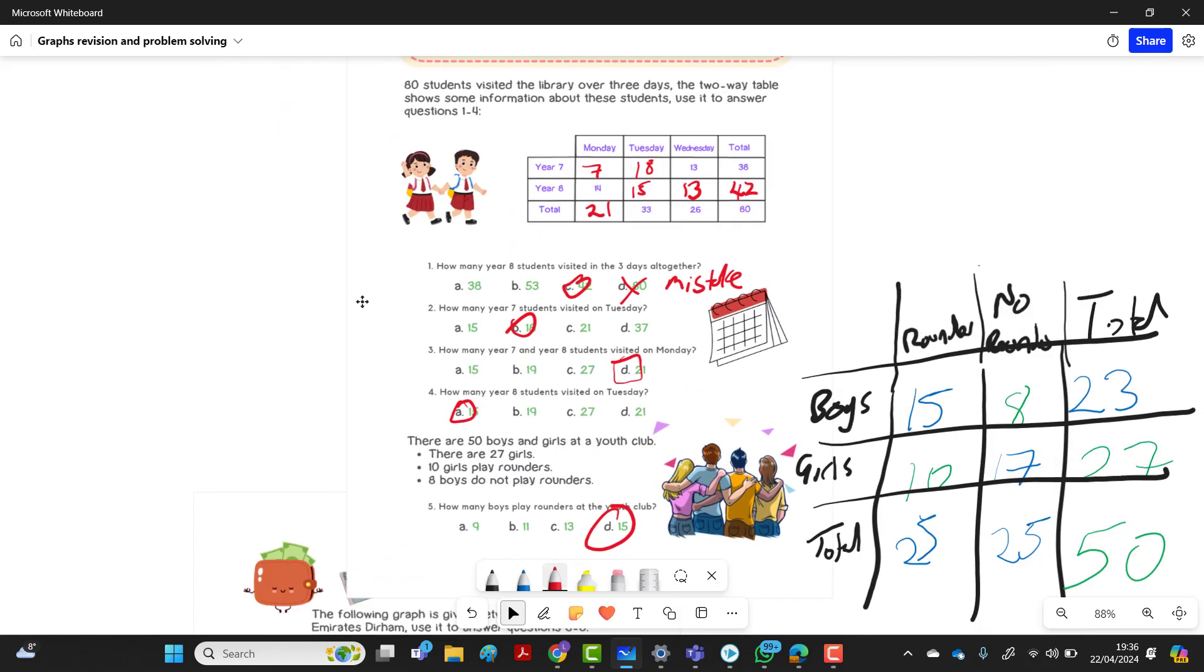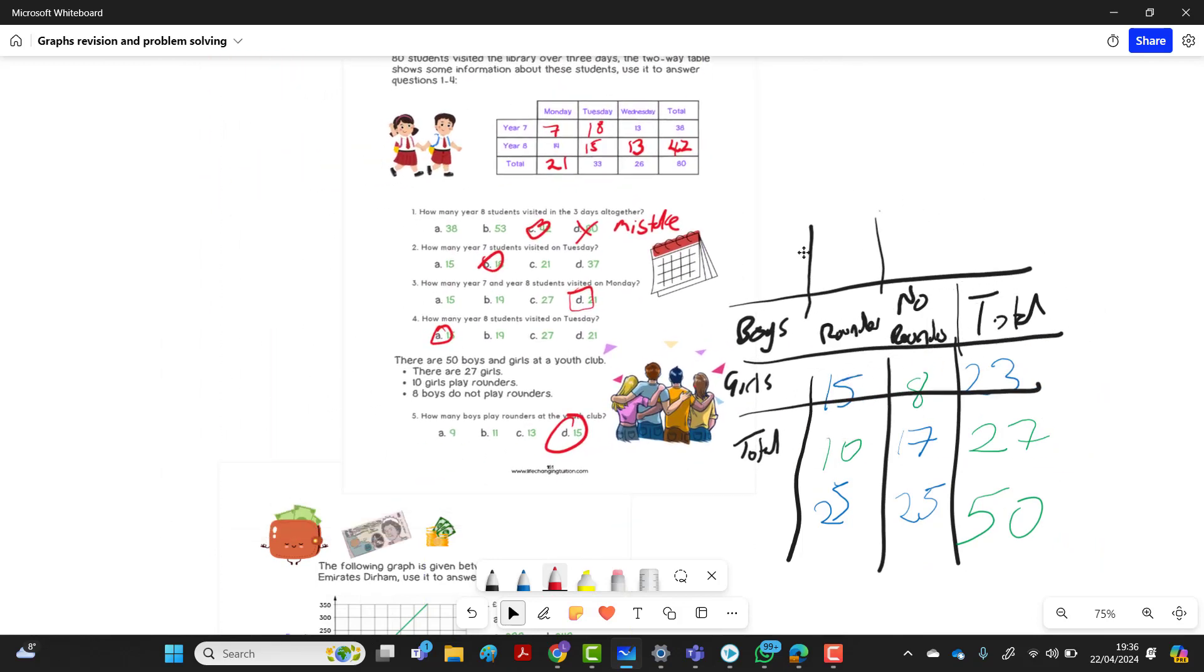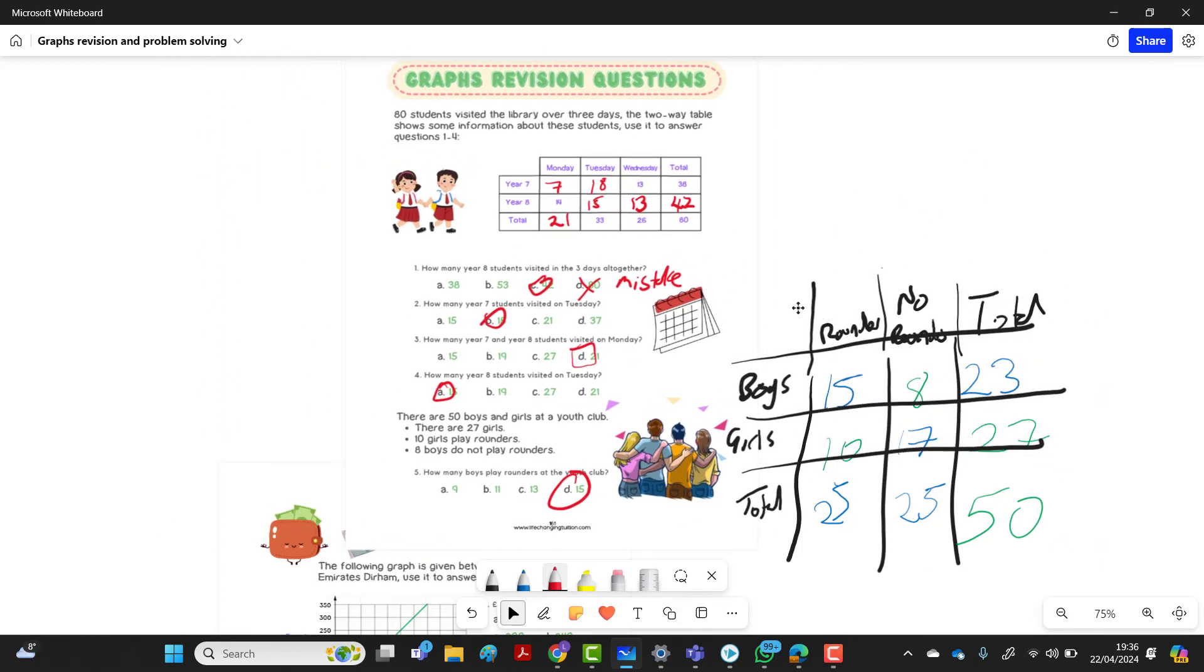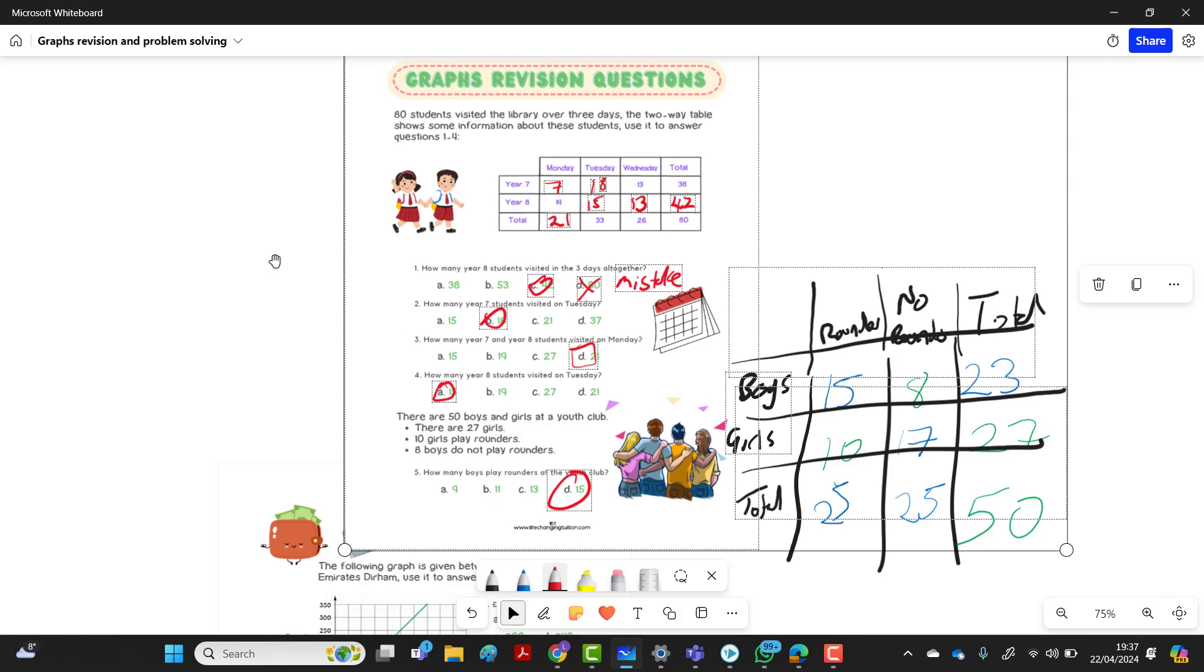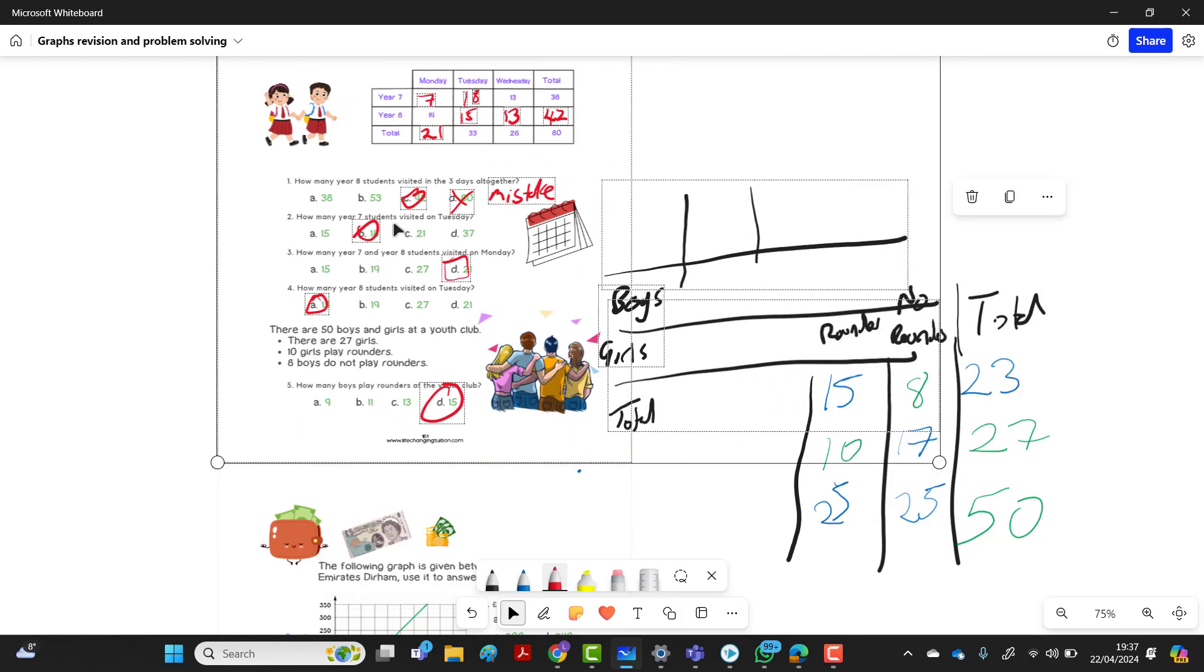And then the total rounders will be 25. And we know it's the right answer because 25 and 25 equals 50. But how many play rounders at the youth club? So it's 25. How many boys play rounders at youth club? So that'd be 15.